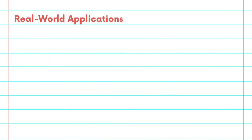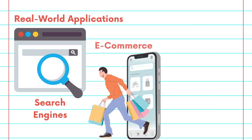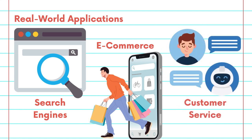Moving to real-world applications, think about how this technology is applied. In search engines, it's what helps differentiate a search for Apple, the technology company, and Apple, the fruit. In e-commerce, it's what allows systems to recommend products that truly resonate with your interests, not just based on superficial browsing history. And in customer service, it powers chatbots and virtual assistants that understand and respond to queries with unprecedented accuracy.